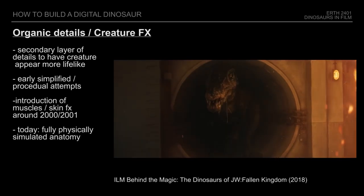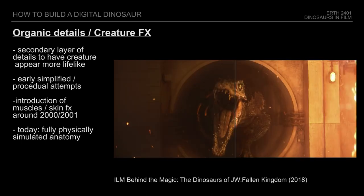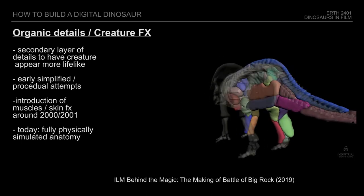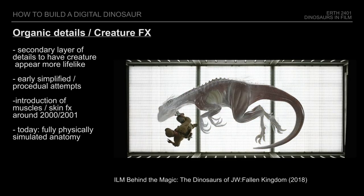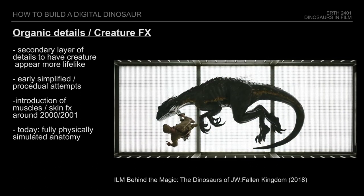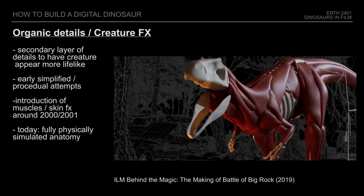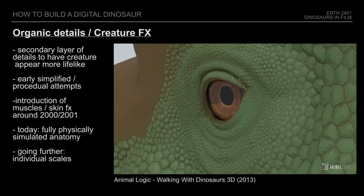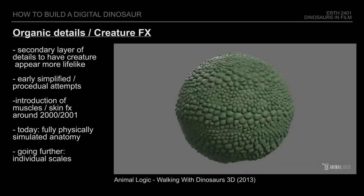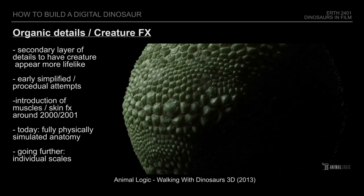Today's computer-generated creatures, not just dinosaurs, are now fully built with realistic digital anatomy, including actual skeletal structures, muscles, fat, and skin which is fully simulated as a volume in order to replicate the complex interactions of real organic components. The team behind the Walking with Dinosaurs feature film even went as far as creating systems that would scatter individual scales on a dinosaur's body for extra detail.